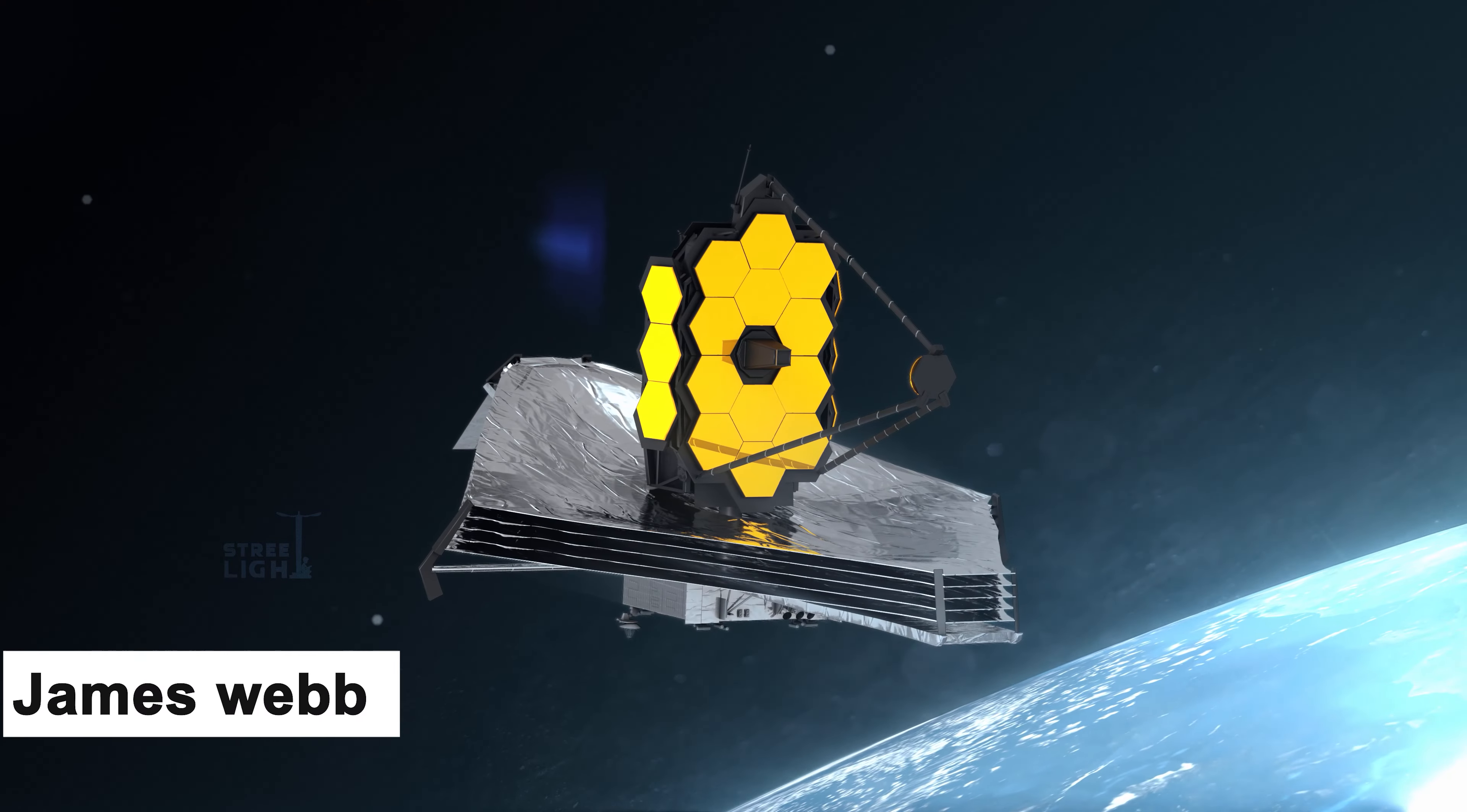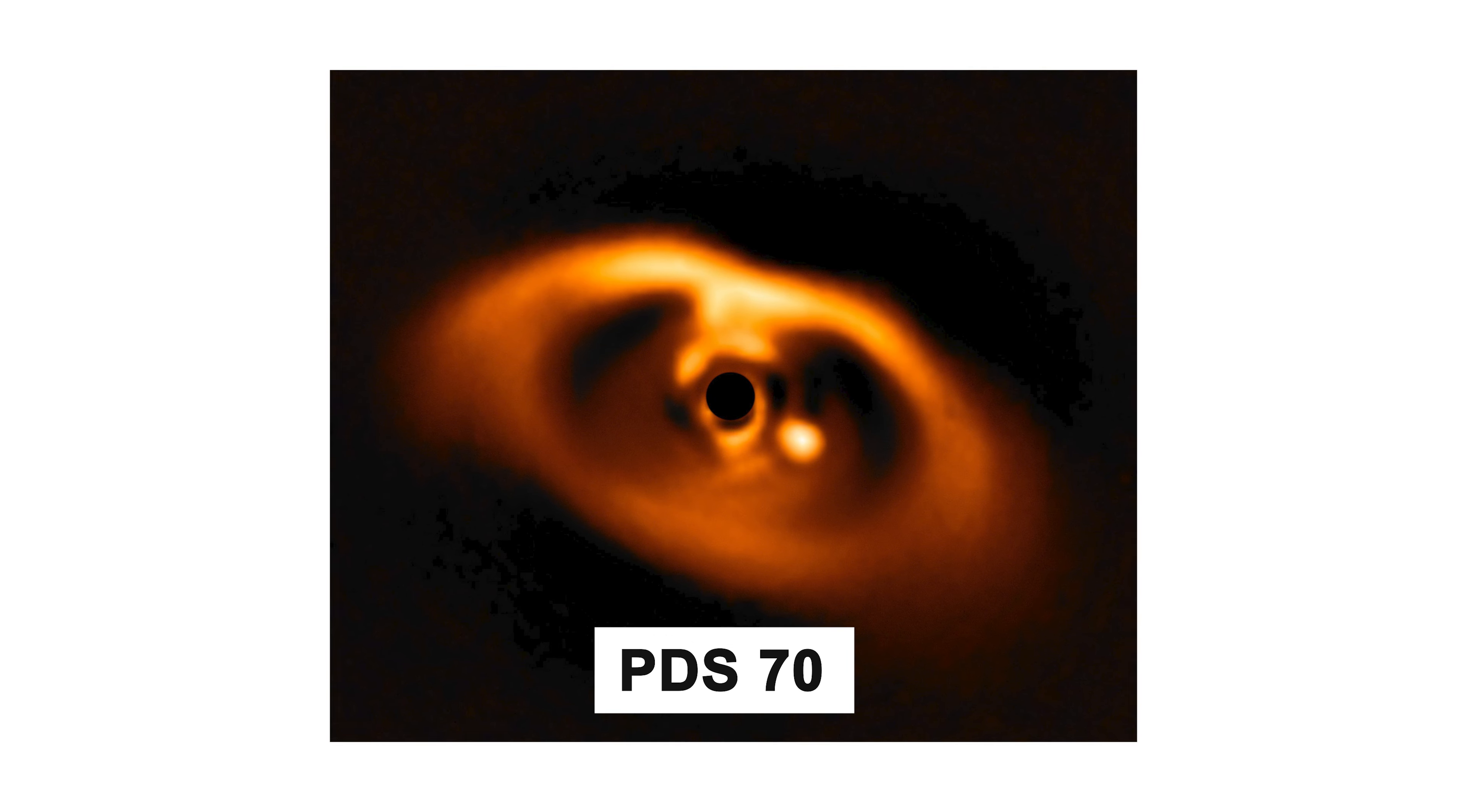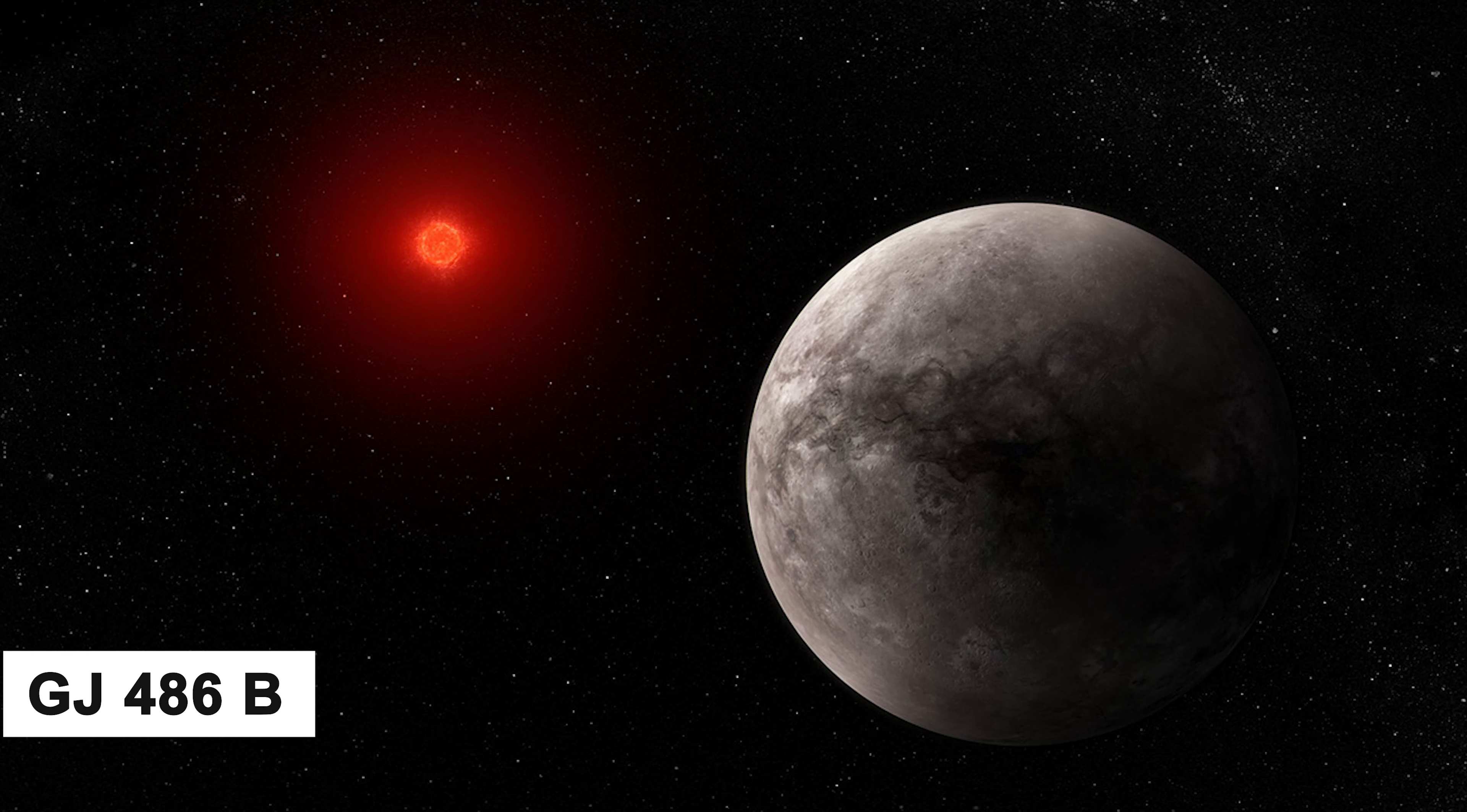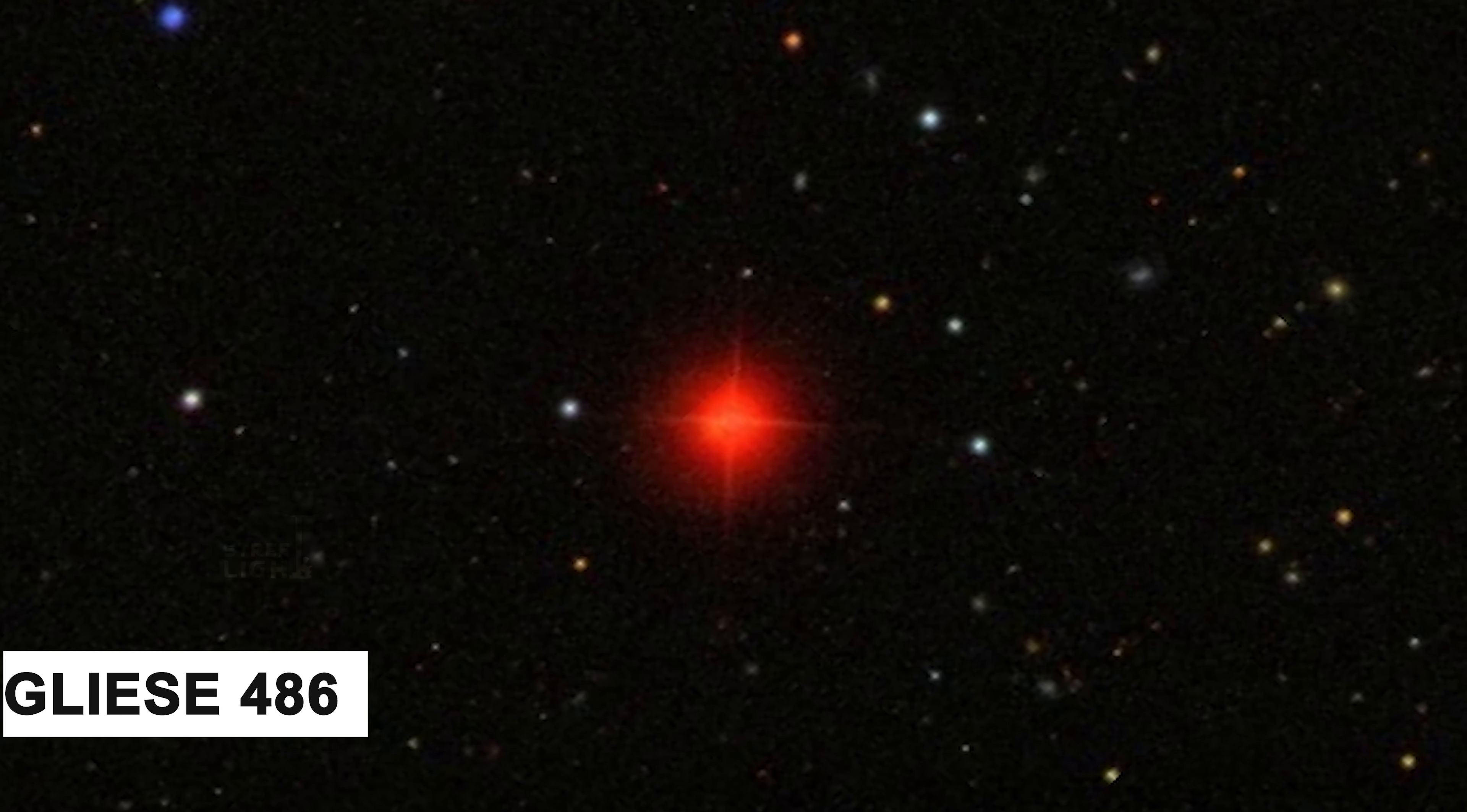Under the Hubble telescope and James Webb telescope, we can see various observations. There is the PDS70 planet-forming disc and the exoplanet GJ486B. These observations can be used to detect water signatures in their atmospheres.